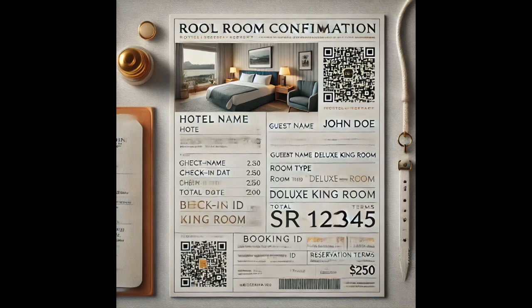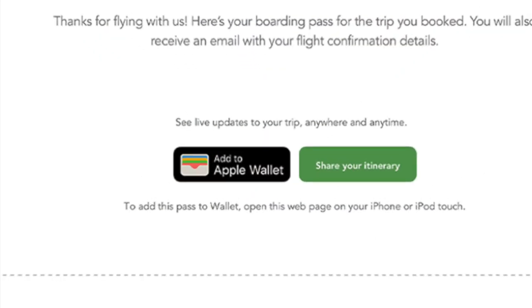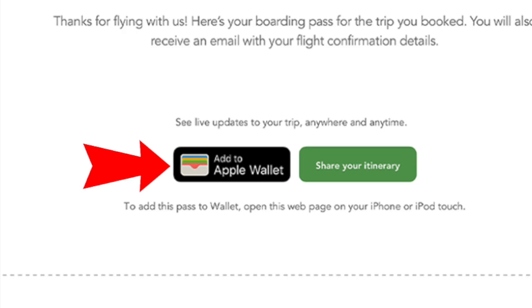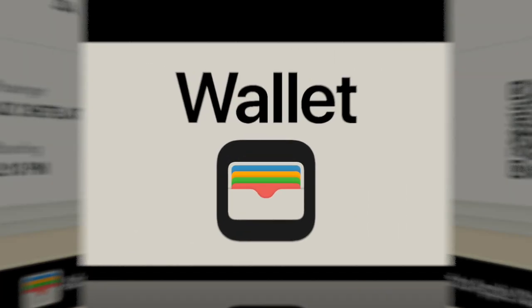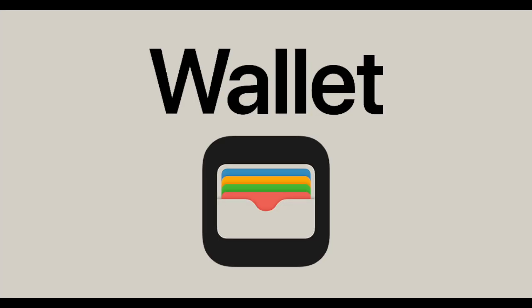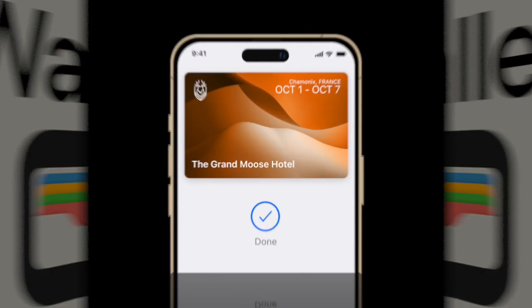Tap the link and follow the prompts. If the hotel uses a compatible app, make sure to download it and sign in. Then look for the 'Add to Wallet' option and tap on it. The key will be stored securely in your Apple Wallet.